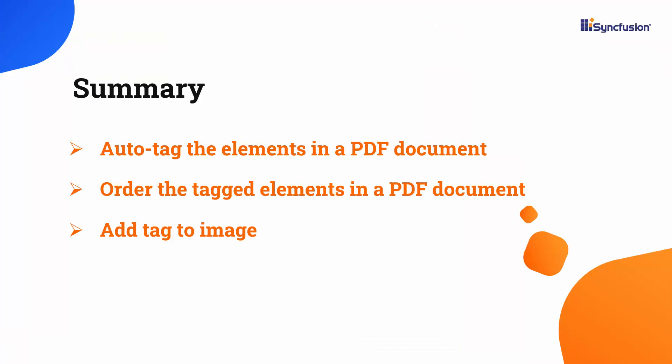Let me recap what I have demonstrated in this video. I showed you how to auto-tag the elements in a PDF document using the Syncfusion PDF library. I also showed you how to order the tagged elements and how to add a tag to an image. If you would like to see the working code of this example, you can download it from the GitHub link in the description below. I've also provided a link where you can see if you qualify for a free community license to use all our .NET products. If you found this video useful, don't forget to click the like button and subscribe to our channel to watch more videos like this. Thanks for watching.